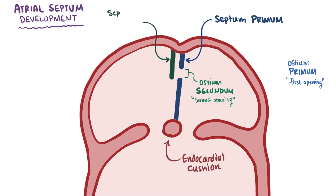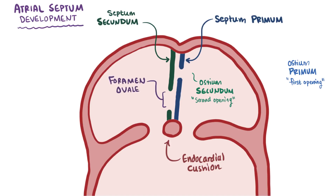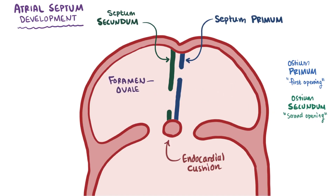Now we also have the septum secundum, which grows downward just to the right of the septum primum and covers the ostium secundum like a curtain, leaving a small opening called the foramen ovale, and essentially creating a makeshift valve that allows blood to go from the right atrium to the left atrium, but not the other way.